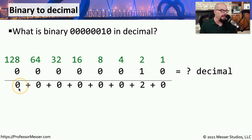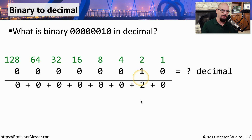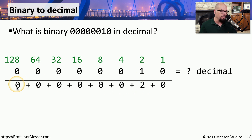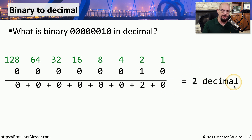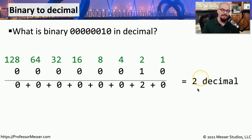If we do that, we're bringing down 0 plus 0 plus 0 plus 0 plus 0 plus 0 plus 2 plus 0. Since that second bit is the one that has the 1 associated with it, we bring down the 2 from our conversion chart. The answer is 2 decimal. So 00000010 in binary is equal to 2 in decimal.